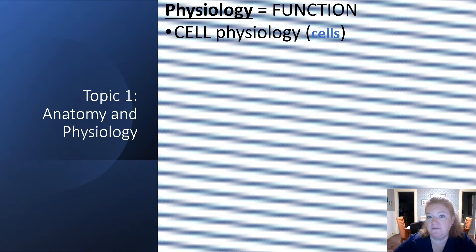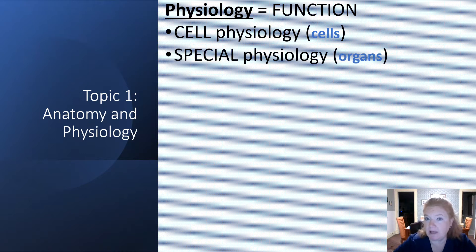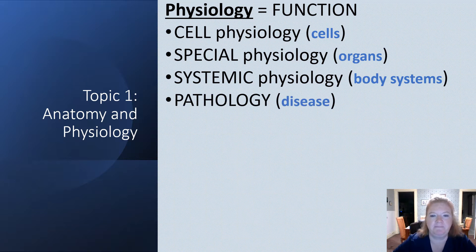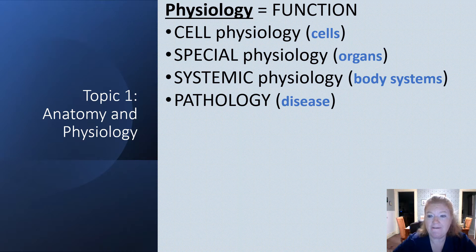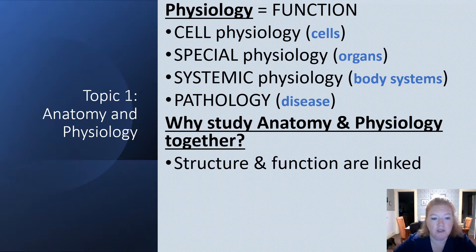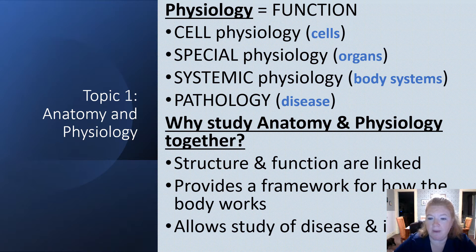Physiology is function. There's cell physiology about cells, special physiology about organs, and systemic physiology based on body systems. And then pathology is based on disease — pathological physiology. Why do we study anatomy and physiology together? Because structure and function are linked. It provides a framework for how the body works and allows us to study disease and its effects on the body.